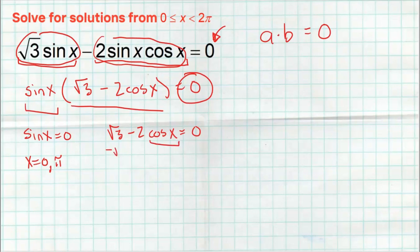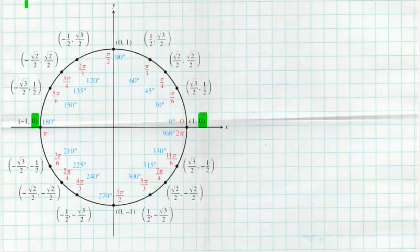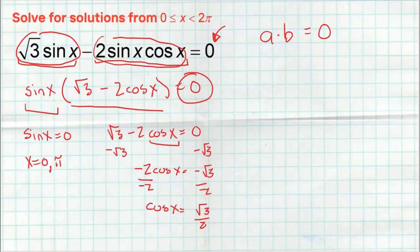Now we're going to solve the other equation. My goal is to isolate the trig function. So I'm going to subtract the radical three from both sides, getting negative two cosine of x equals negative radical three. Then I divide both sides by negative two, and I get cosine of x equals positive radical three over two — two negatives made a positive. So going back to the unit circle, where is cosine equaling radical three over two? That's at pi over six and also at eleven pi over six.